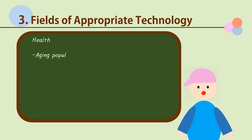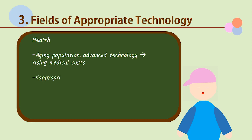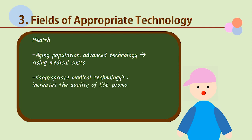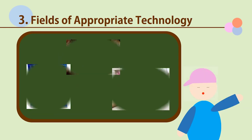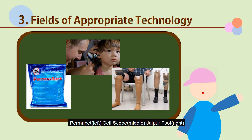The next field is health. With an aging population and more advanced technology, medical costs are also rising. Therefore, there has been an increase in the number of people interested in appropriate medical technology — a form of technology that, apart from increasing the quality of life and promoting better health, is accessible to low-income families as well. Low price, stability, and effectiveness are three standards that this technology strives to uphold. This mosquito net, treated with insecticide, is called Permanet and it prevents malaria. Cell Scope is a microscope that works when connected to a cell phone. Draper Foot helps people whose legs have been amputated to walk again, and it is much more affordable than other prosthetics.